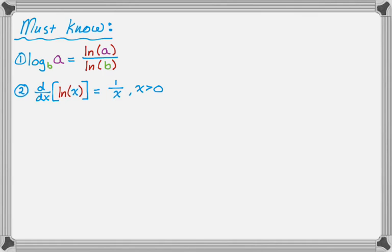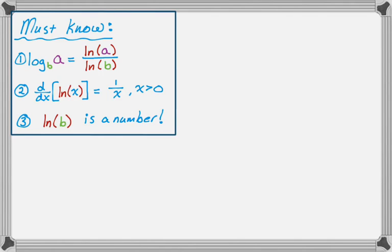And then a third thing that you need to know, which some people kind of lose sight of, is that the natural log of b is a number, as long as b is not a function. And that's important because we're not going to end up using the quotient rule when we find the derivative. We're actually going to use the constant multiple rule, which can save you a lot of time and effort. Okay, so those are the three things that we need to know, and now I'm going to do a couple of examples.